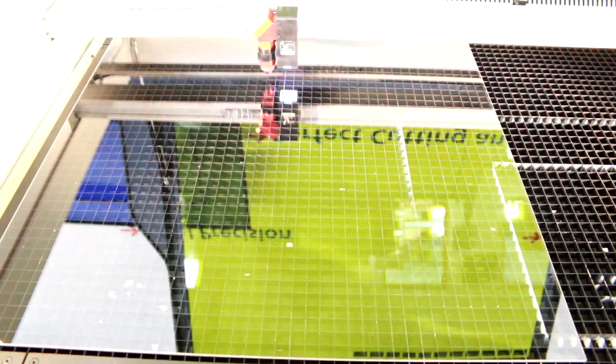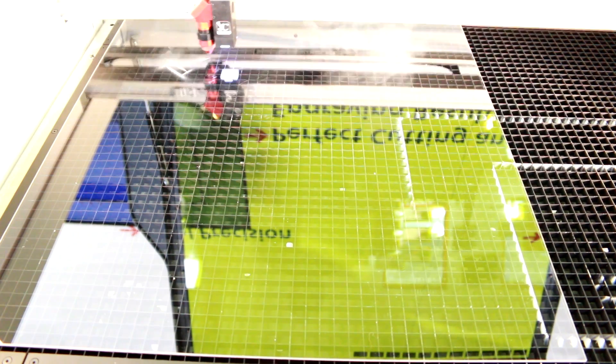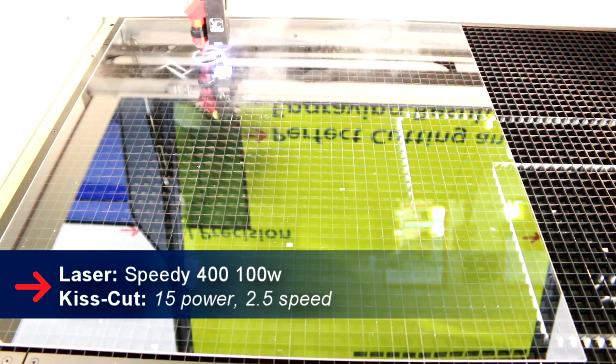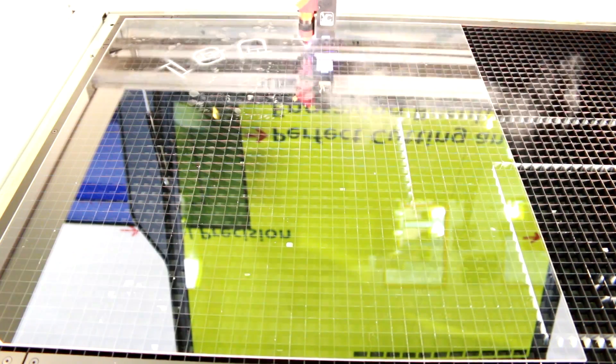For the base of the sign we use our Trogos Clear 3mm thick acrylic. We then kiss cut the clear acrylic to know where to position the metallics on top.